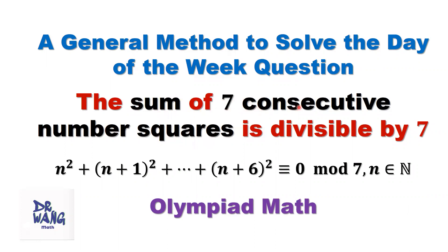The sum of seven consecutive number squares is divisible by seven. In mathematical notation, we have seven squares here. Those seven numbers are consecutive: n, n plus one, until n plus six. If this number is divided by seven, we will have a remainder of zero, which means this number is divisible by seven.